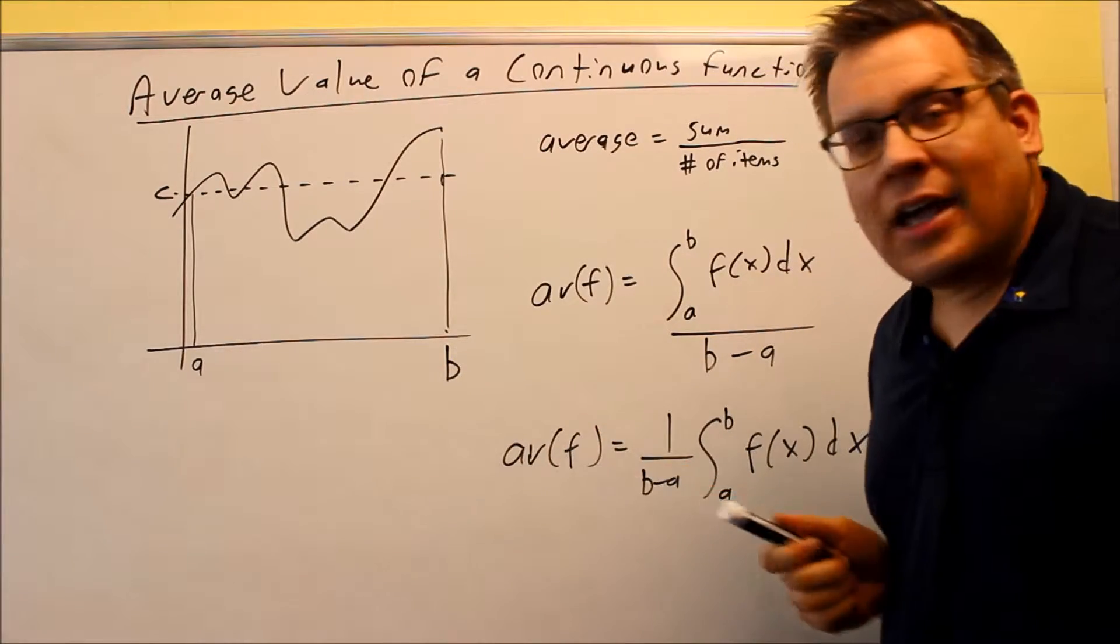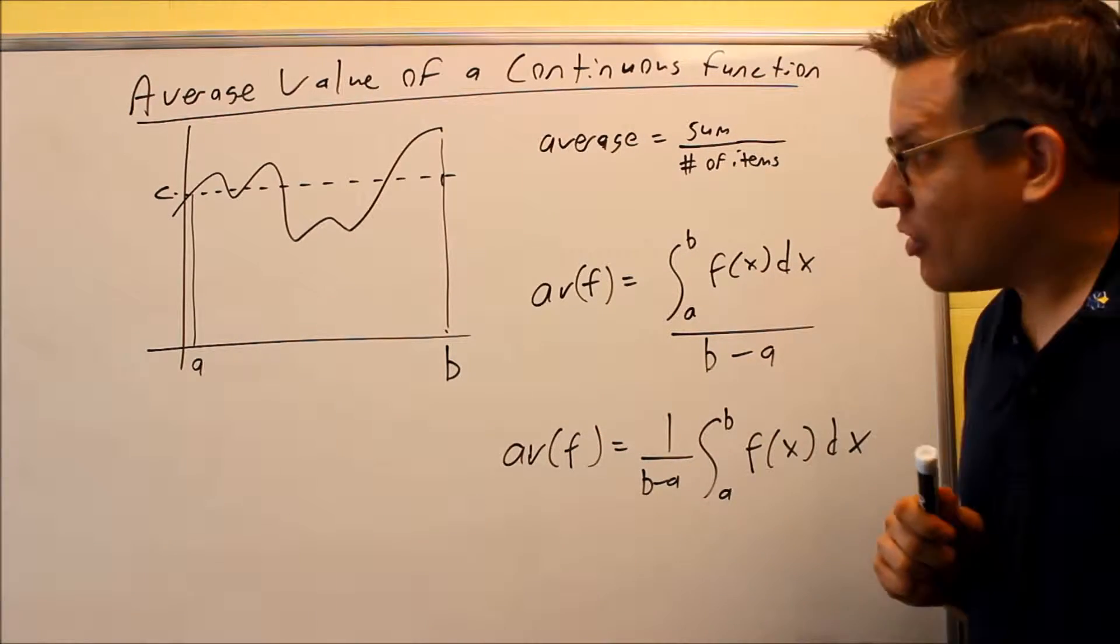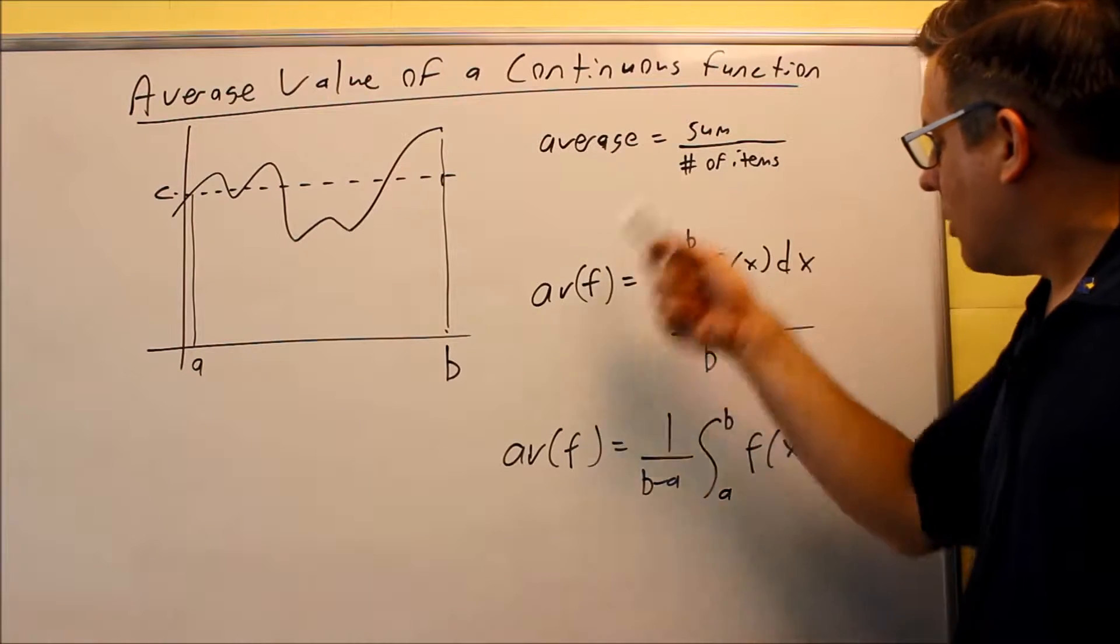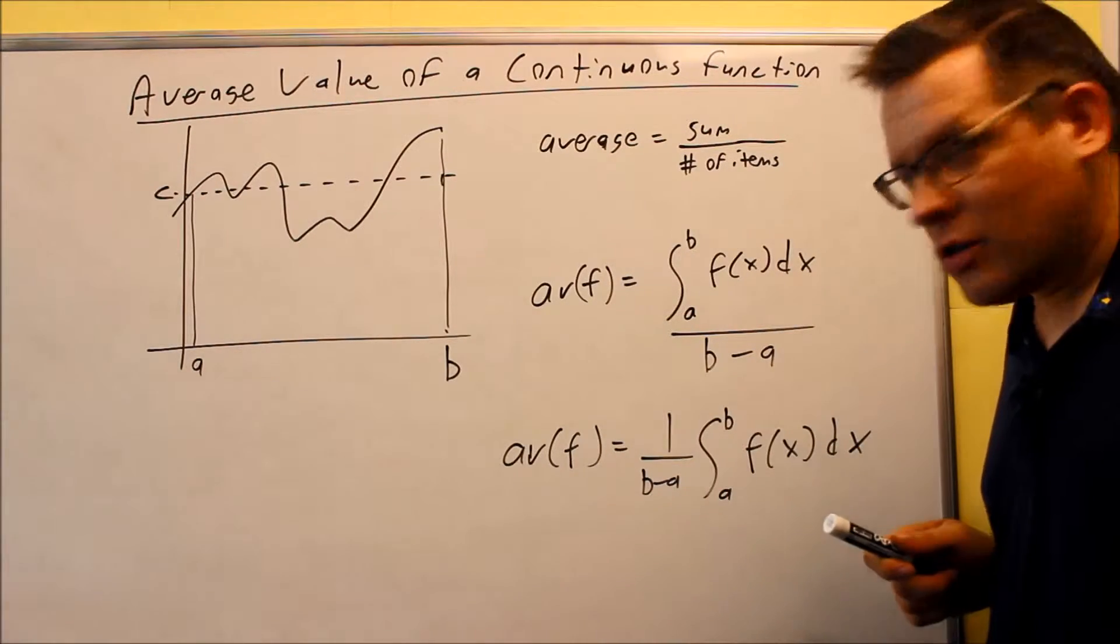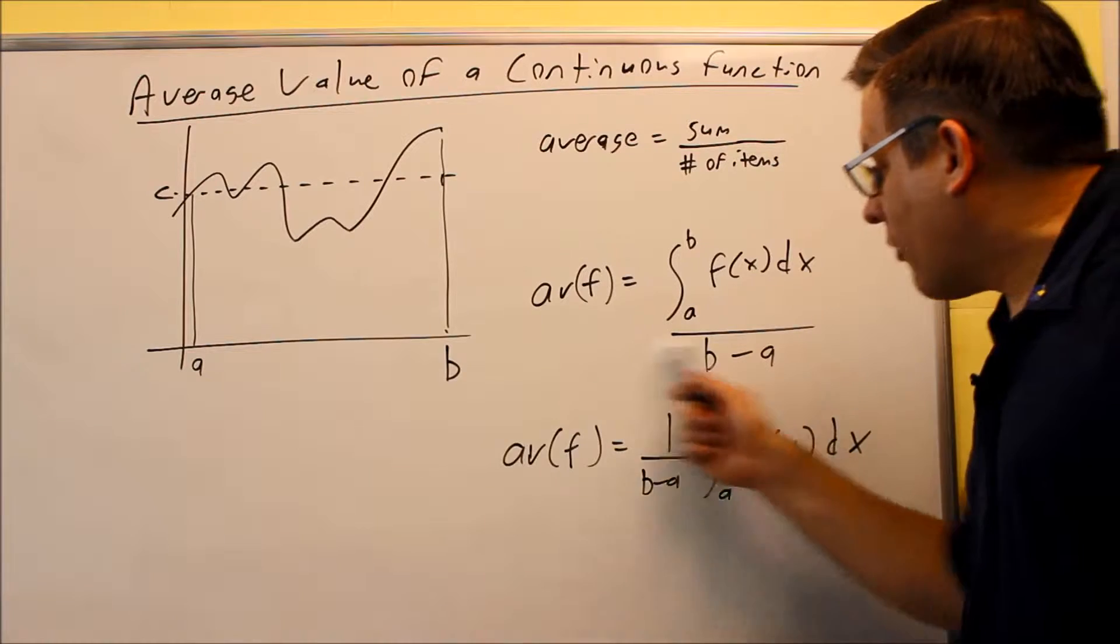But then we're dividing it by the space between A and B. So geometrically, this is how you're going to find that. So by doing this, finding that formula, the B minus A we can put out front there, this is going to be your average value.